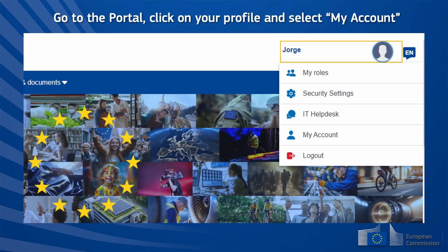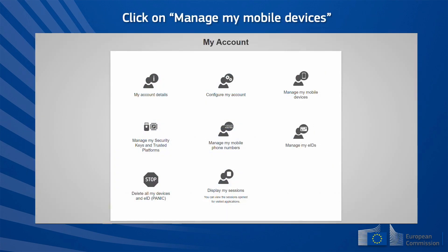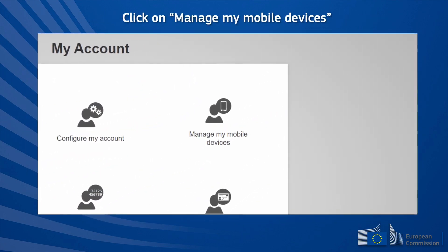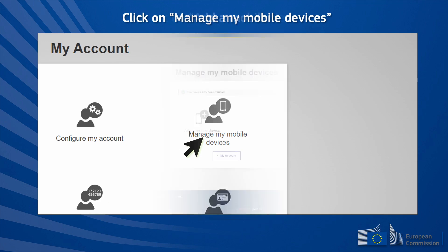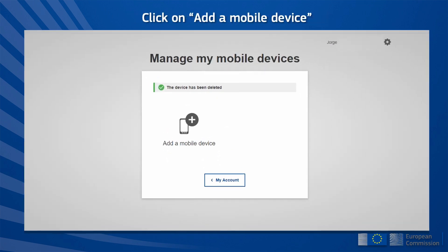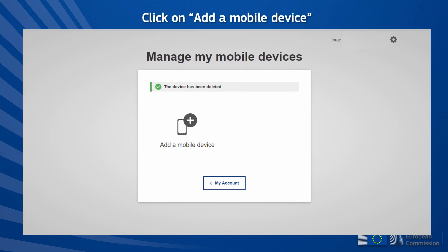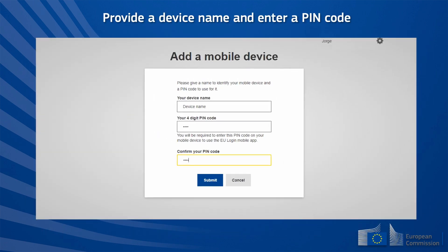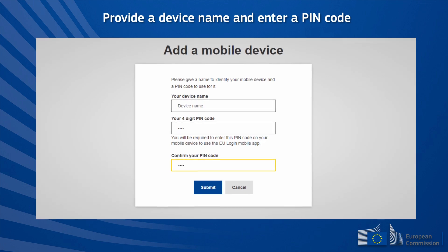Go to the portal, click on your profile, and select My Account. Click on Manage My Mobile Devices. Click on Add a Mobile Device. Provide a device name and enter a PIN code.